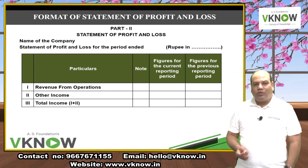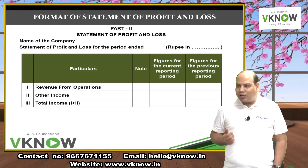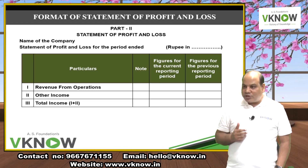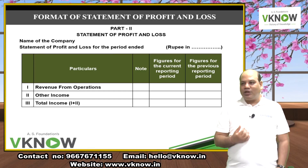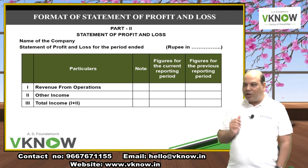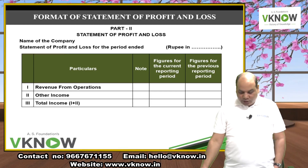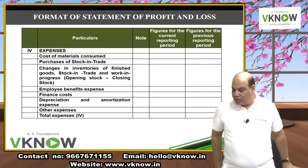Revenue from Operations is your main operating income — for example, tuition fees, sale of books, test series, online coaching. Other Income includes non-primary activity income like dividend income or interest income. If your business is finance, dividend goes under Revenue from Operations. Total Income = Revenue from Operations + Other Income.